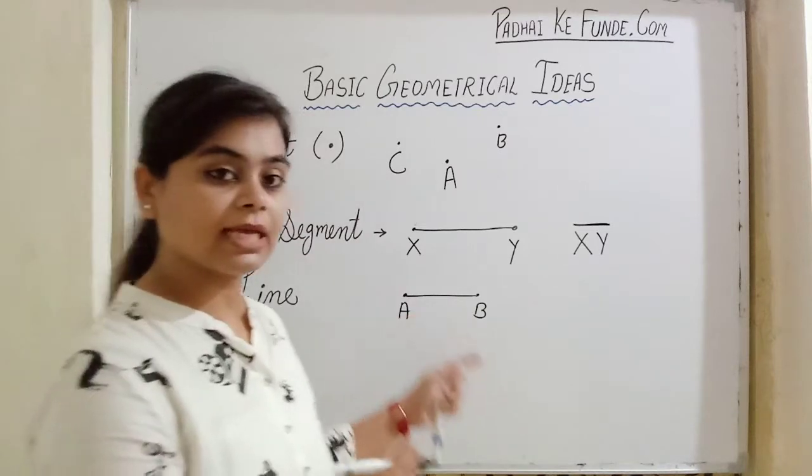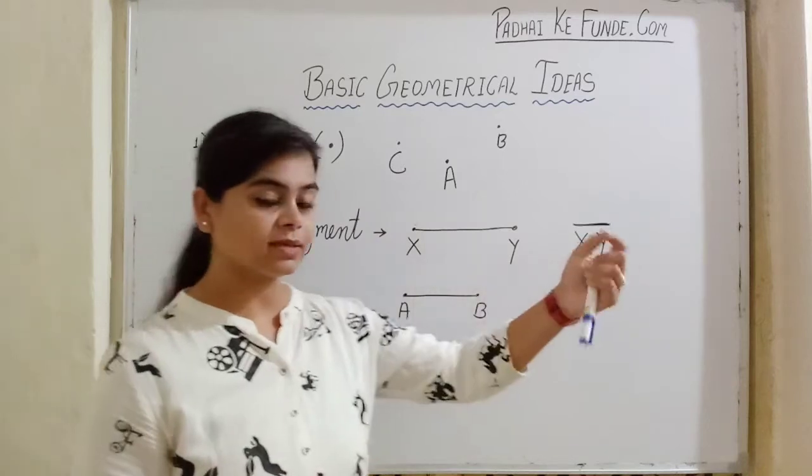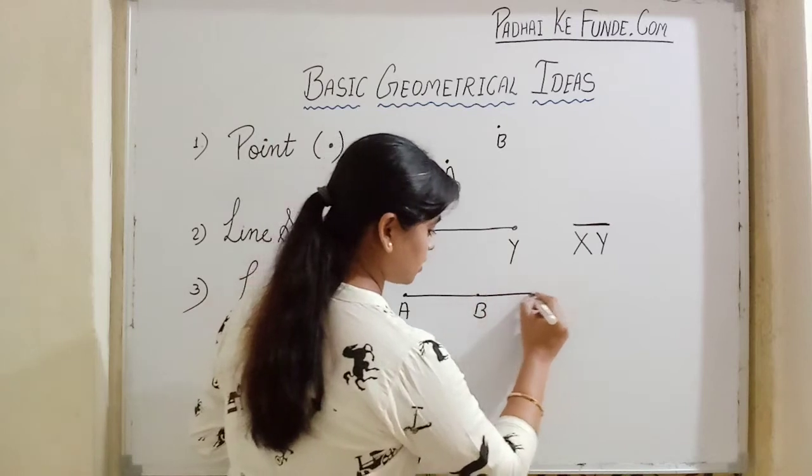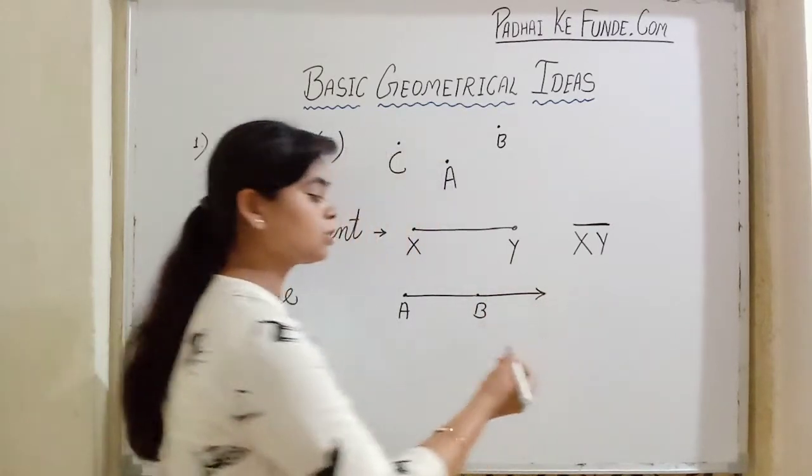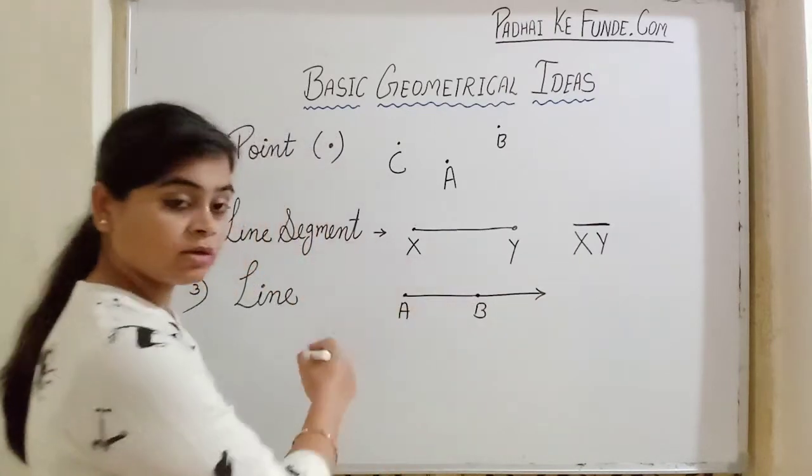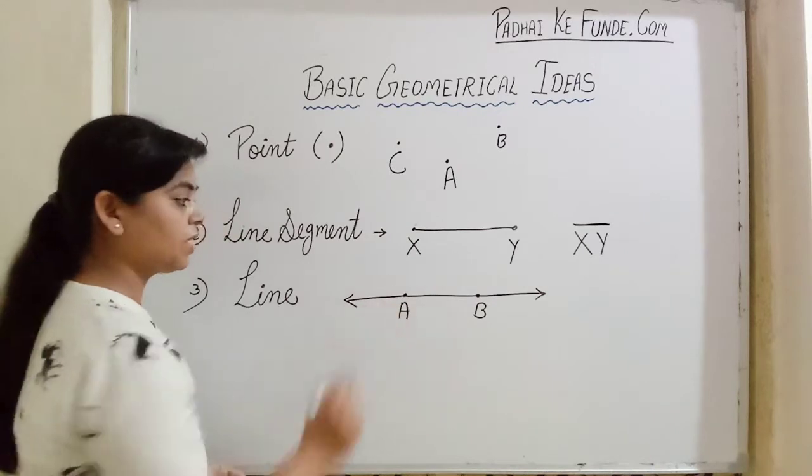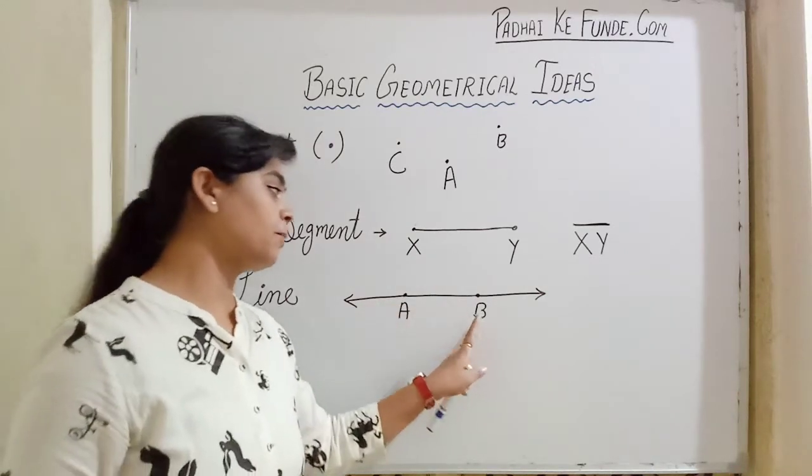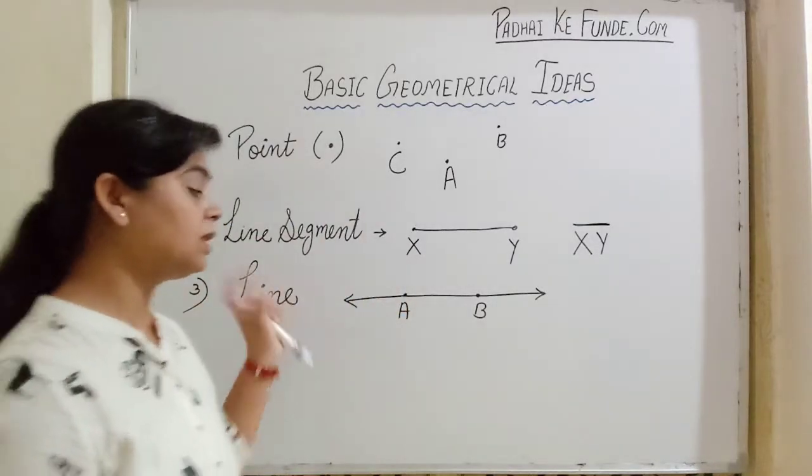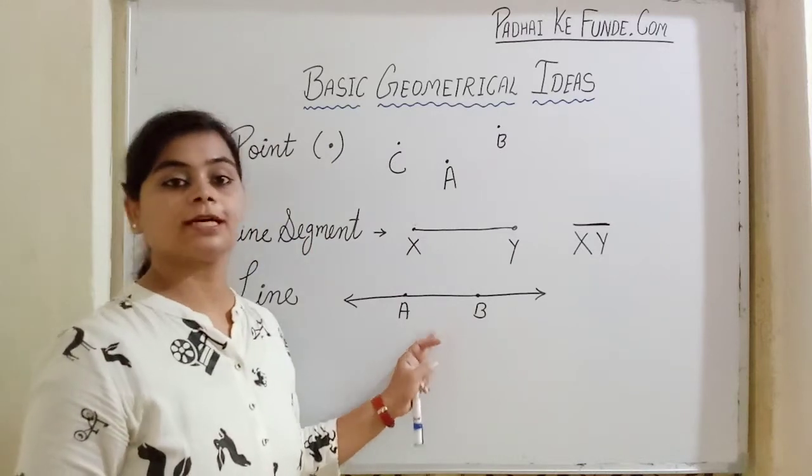If we extend this line segment from both points forward, unlimited, anyhow - this arrow shows that it can go further in this direction. And same with the other side also. Now it is showing that from point B it can go further and from point A also it can move further. Means it is endless.